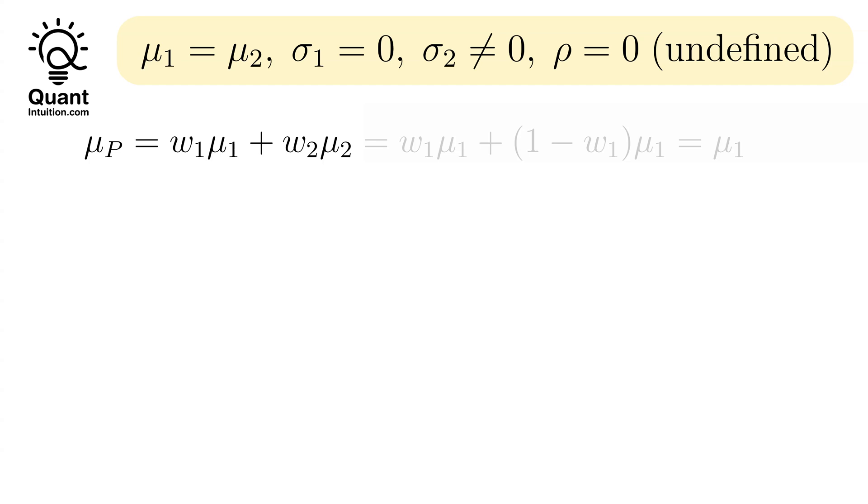Our goal is to determine the optimal allocation between the two stocks or trades, meaning the ideal value for W1. By applying our assumption that mu2 equals mu1 into the formula for muP, we find that the expected value remains consistent to mu1, regardless of allocation.